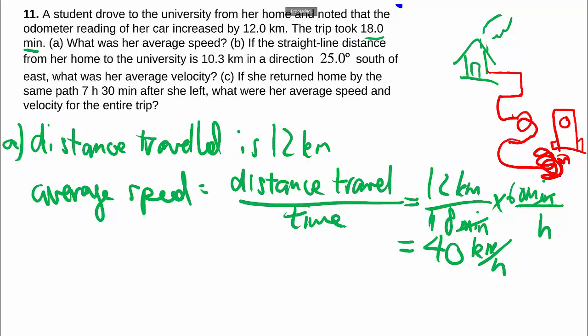Part b asks us for the average velocity. So in this case we're concerned with where the school is located relative to her home, not necessarily how she gets there. So all we care about is from the start to the finish how far does she go and we're told that she goes 10.3 kilometers